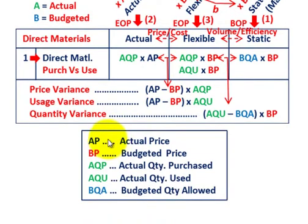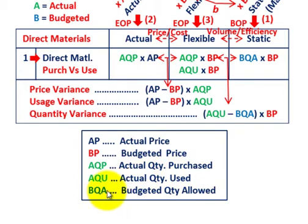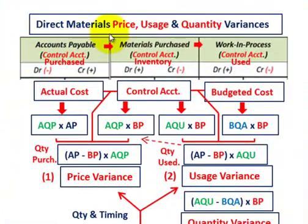The key abbreviations: AP (actual price) shown in dark blue, BP (budgeted price) shown in red, AQP (actual quantity purchased), AQU (actual quantity used), and BQA (budgeted quantity allowed) shown in blue. Next we want to look at the flow when talking about direct materials price and usage variances.